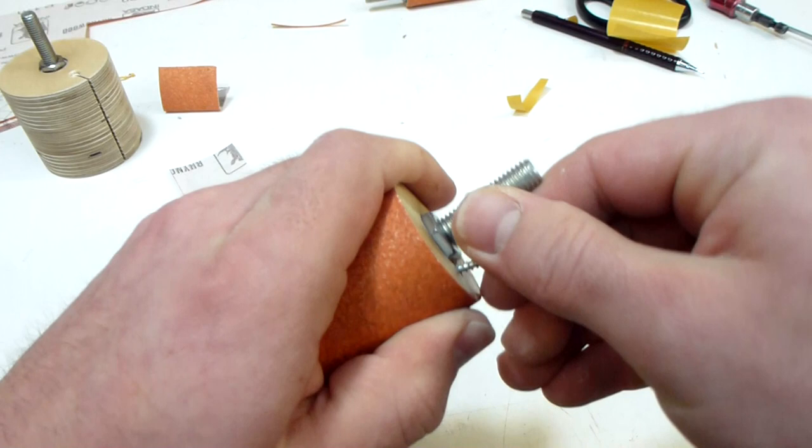I really prefer this method because you don't need any glue or double sided tape. Then the spindle is ready to use.